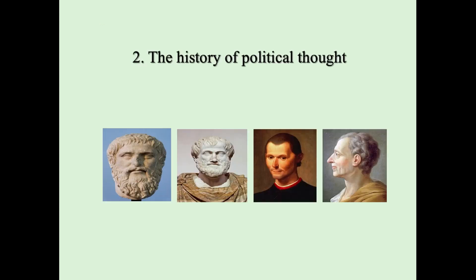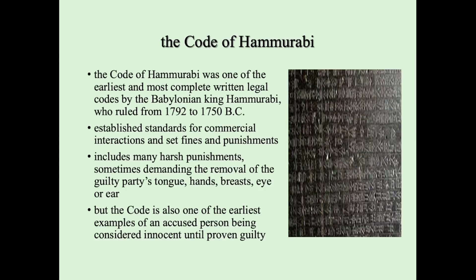Now let's proceed to the second part — the history of political thought. This is the historical part of the political science program. The first topic is the Code of Hammurabi. The Code of Hammurabi was one of the earliest and most complete written legal codes, created by the Babylonian king Hammurabi. It first established standards for commercial interactions and set fines and punishments.